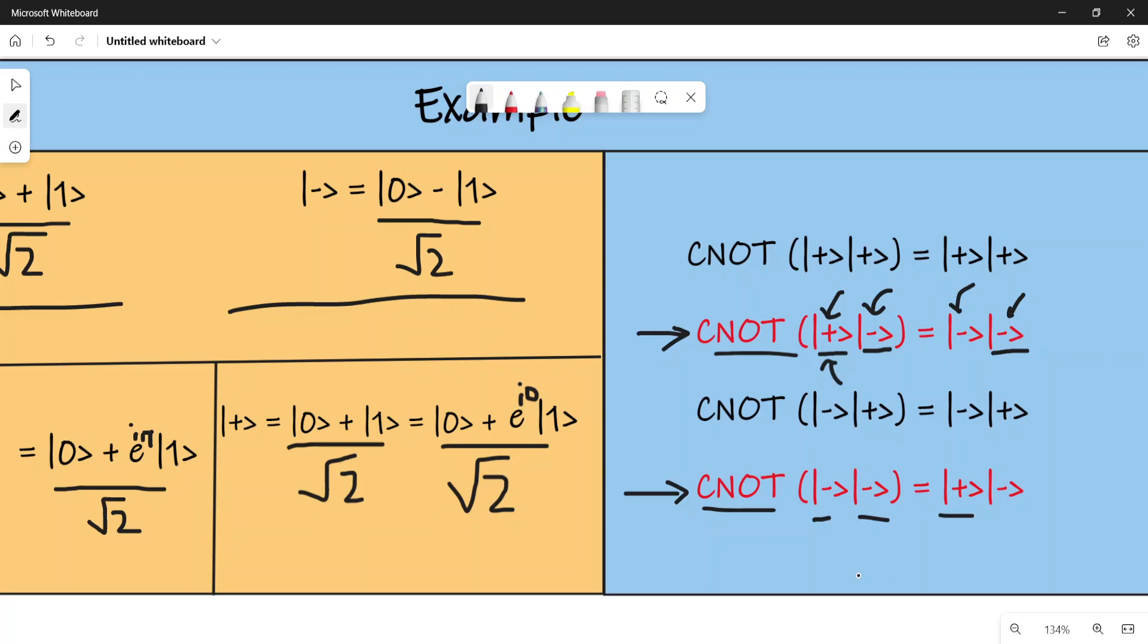If you consider the phase of the previous ket minus state, it was e^(iπ). But if you add another e^(iπ), which is the phase of this qubit, e^(iπ) and e^(iπ) together becomes e^(2πi).